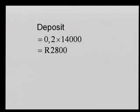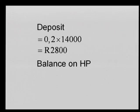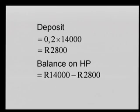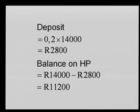The deposit is 20% of R14,000: 20 ÷ 100 = 0.2, so 0.2 × R14,000 = R2,800. Subtracting the deposit from the purchase price gives the balance she still owes on hire purchase: R14,000 − R2,800 = R11,200. She must still pay back R11,200, before interest.